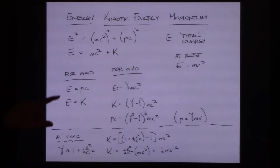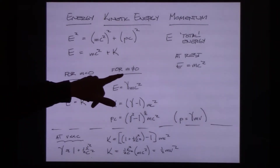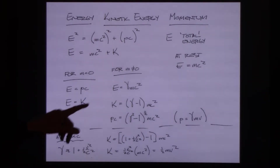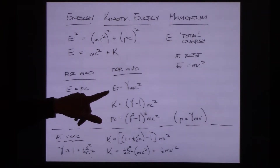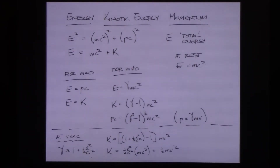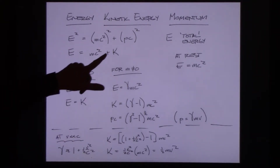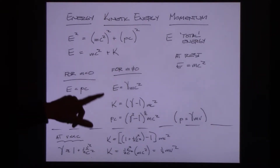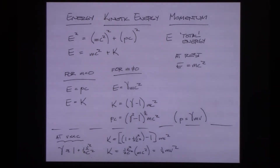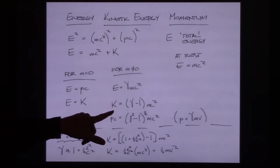For a photon, all of its energy is kinetic because none of its energy is mass. For everything else where mass is not zero, the total energy can be written as γmc², where γ is the Lorentz factor. To get kinetic energy, take total energy and subtract off the mass energy: KE = (γ − 1)mc². If an object is at rest, γ = 1, so E = mc² and there is no kinetic energy.